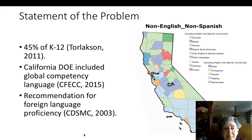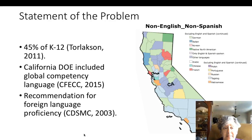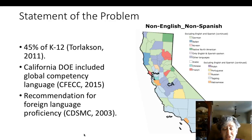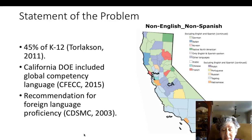In California, 45% of K-12 students live in households where English is either not spoken or is not the primary language, according to Torlix in 2011. The California Department of Education has now included language about global competency within the expectations for graduating seniors, according to the Curriculum Framework and Evaluation Criteria Committee in 2015. The California Department of Education has also recommended that students be proficient in at least one language other than English before they graduate, according to the Curriculum Development and Supplemental Materials Commission in 2003.